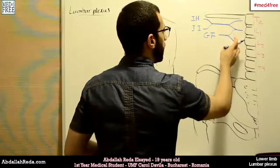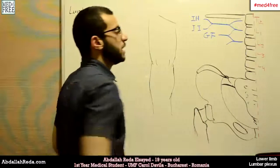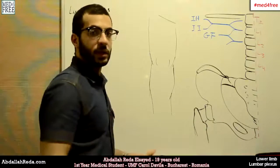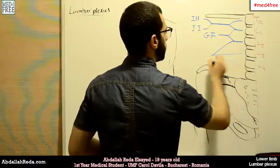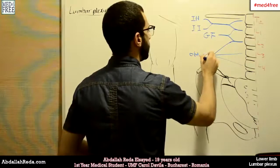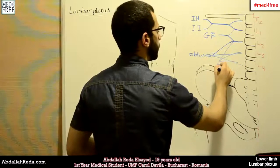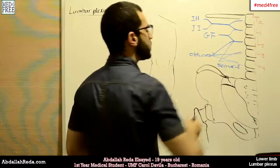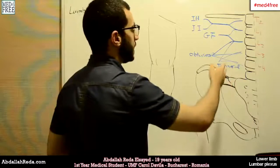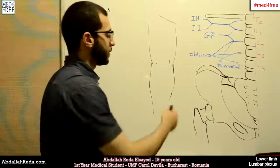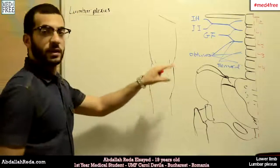Then we have the lower division of L2 and the whole ventral rami of L3 and L4. These anastomose in two ways: an anterior anastomosis and a posterior anastomosis. The anterior anastomosis gives us the obturator nerve, and the posterior anastomosis gives us the femoral nerve. Also from the posterior anastomosis, L2 and L3 — without L4 — give us the lateral femoral cutaneous nerve.